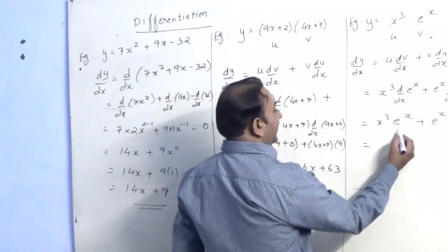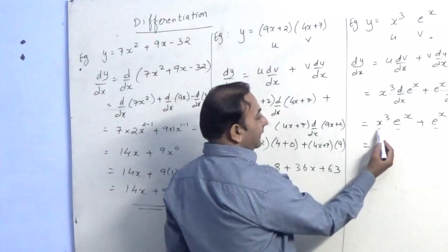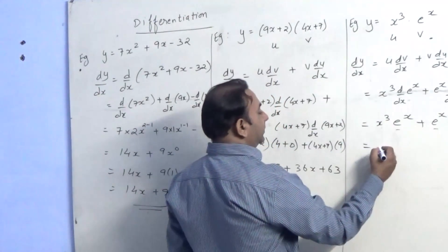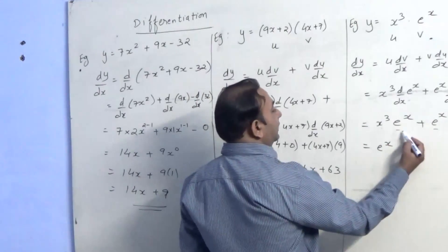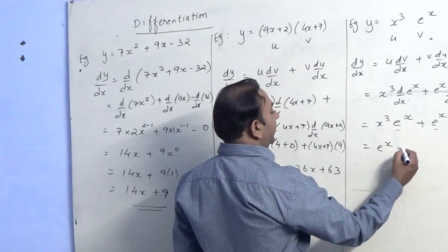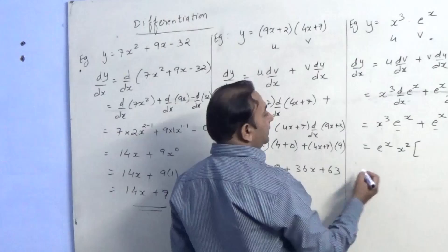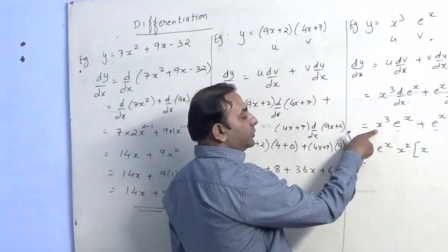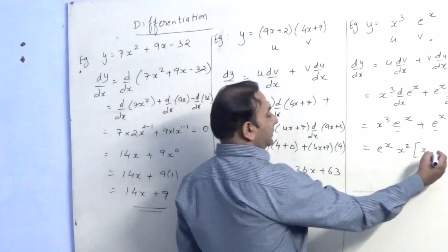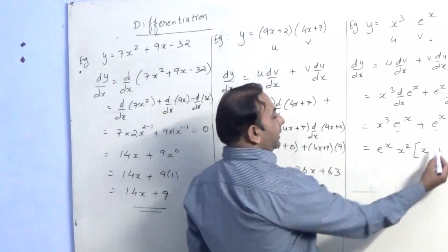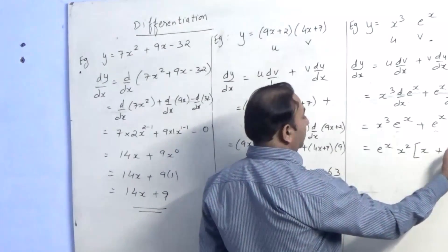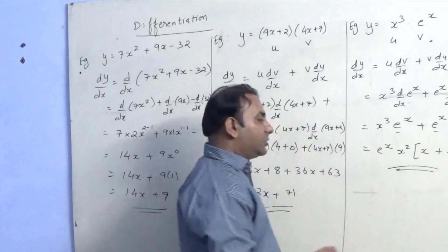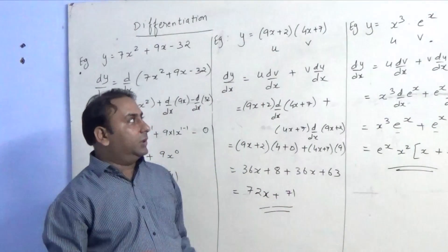Now if you want, you can add one more step. We can take e raised to x common, and from x cube and x square we can take x square common. So we get e raised to x times x square as the common factor. What remains inside is x plus 3. So the final solution is e raised to x times x square times the quantity x plus 3. So we have found the derivatives.